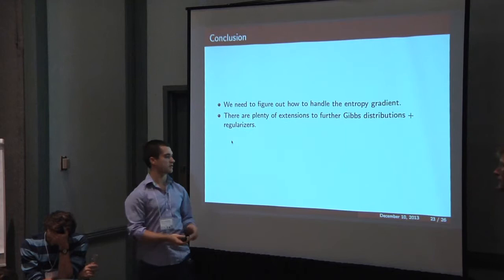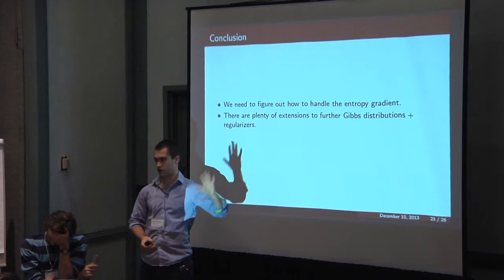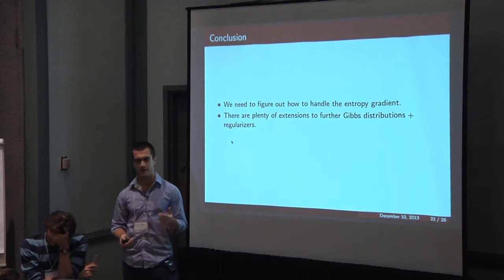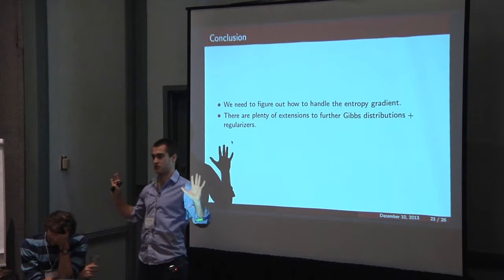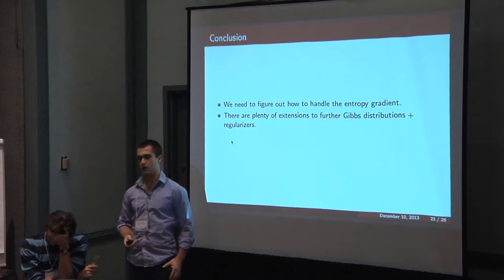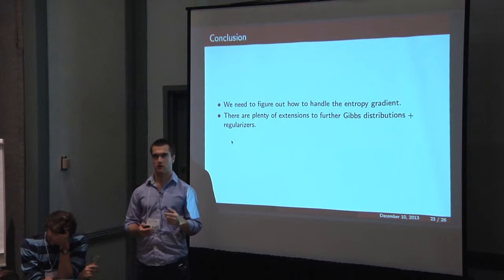So the true marginal inference problem is sharp P-hard for both graphical models and matchings. It's called the permanent for matchings, right? But I guess the first approximation is that I make this entropy approximation. So I'm not solving the original problem to begin with. Then there are further relaxations, the local polytope and stuff like that.